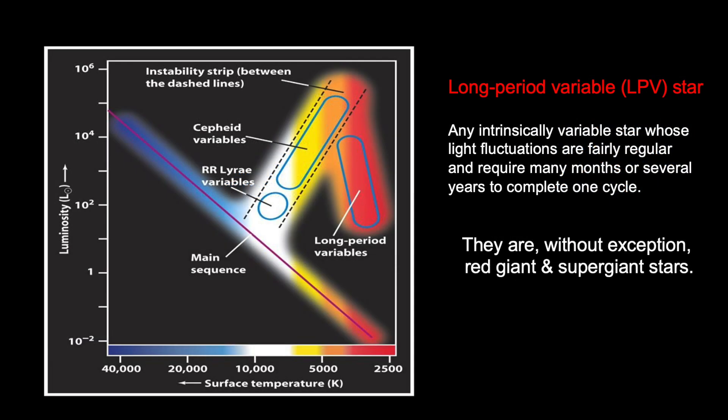So, what is an LPV star? This information was easy to find on Google. It is any intrinsically variable star whose light fluctuations are fairly regular and require many months to several years to complete one cycle. They are, without exception, red giant and red supergiant stars. That's cool. Figuratively and quite literally, I guess. We are dealing with some kind of red giant star.